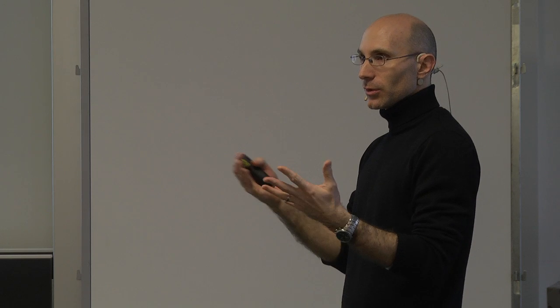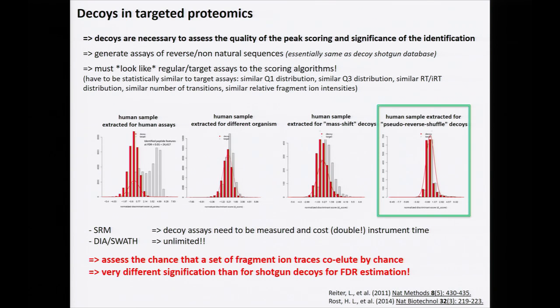The idea is to assess the chance that fragment ion traces coelute by chance, and this has very different significance between targeted proteomics and shotgun-type decoys. For a target peptide, you generate a reversed peptide sequence — keeping the same precursor Q1 mass but producing different Q3 fragment masses in a non-natural sequence order. This sequence should not exist in nature. You assess the chance that these four transitions elute in your sample matrix at this Q1 mass and this retention time window.